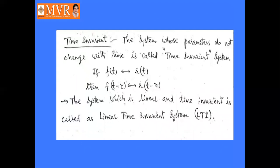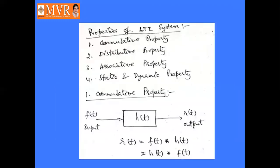A time invariant system is one whose parameters do not change with respect to time. If f(t) is the input and r(t) is the output with f(t) related to r(t), then f(t−τ) is related to r(t−τ). The system which is both linear and time invariant is called a Linear Time Invariant (LTI) system.